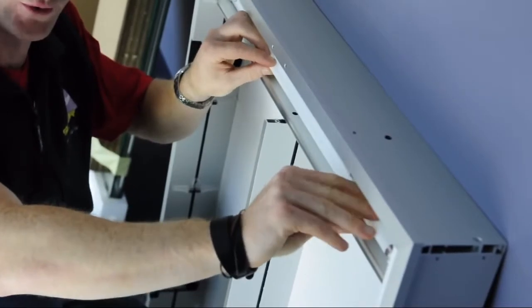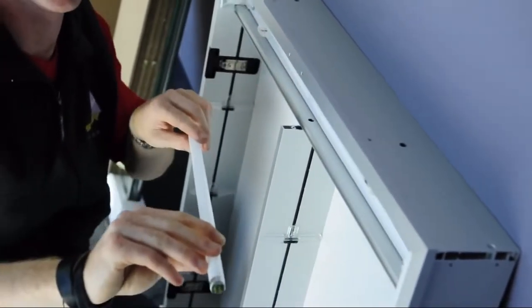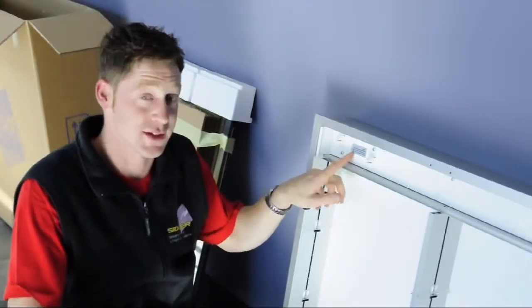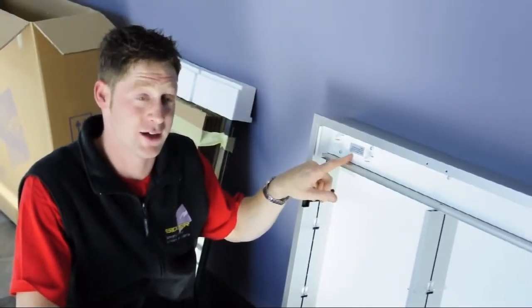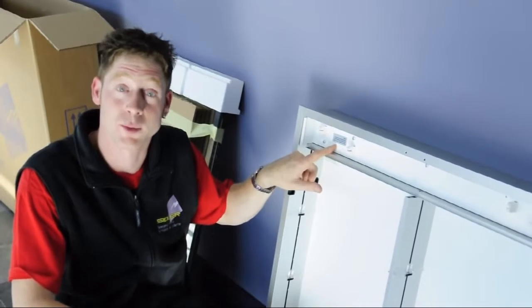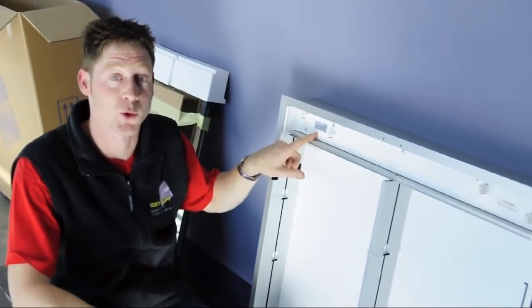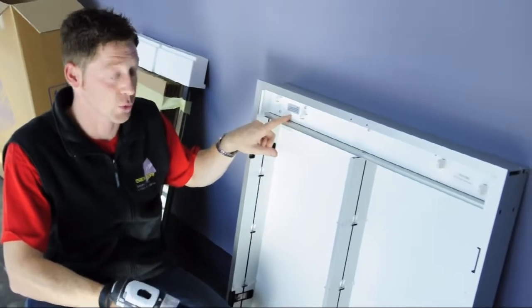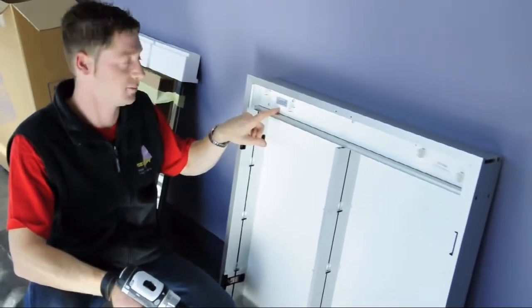You can simply turn the fluorescent tubes and they come out. Here is the electrical cover where we get access to the terminal block which we need later on to hook up the cabinet to the wall switch in your bathroom to turn the light on and off.